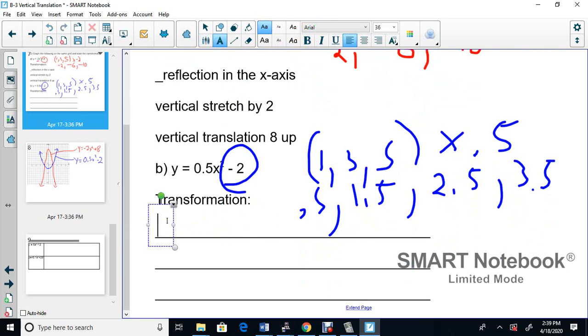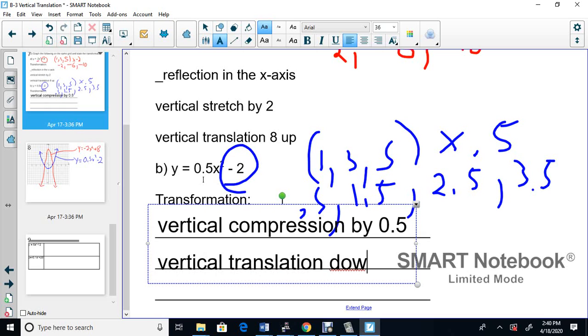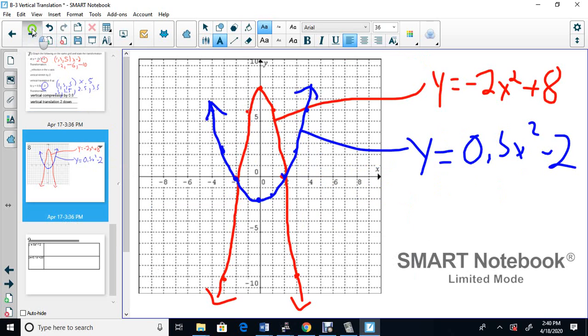So first, it's a vertical compression by 0.5. So this number in the front tells you it's compressed. And there's a second one. There's no negative in the front. The next one is, it's a vertical translation down, or two down, or down two, whichever way you want. The negative 2 tells you it goes down 2. So vertical translation 2 down. So we only have two transformations.